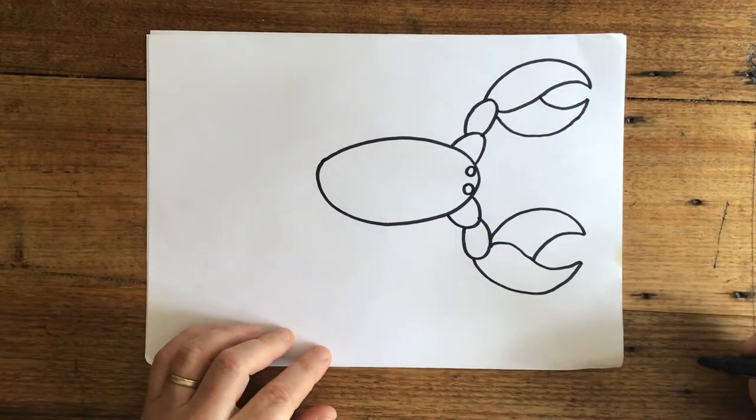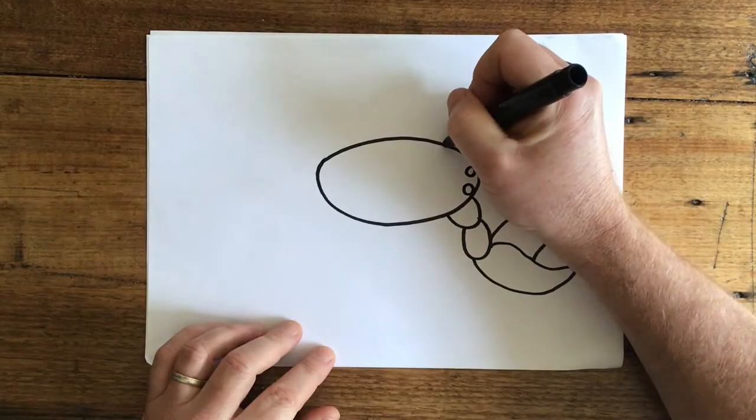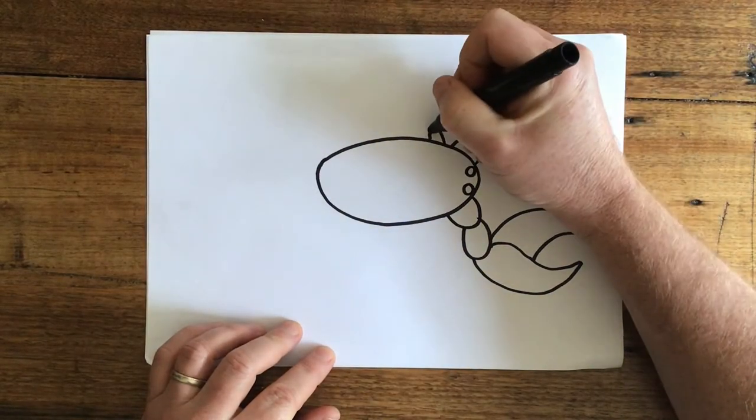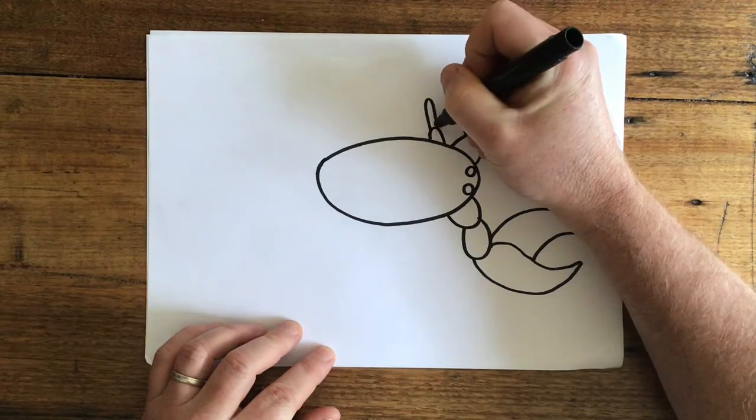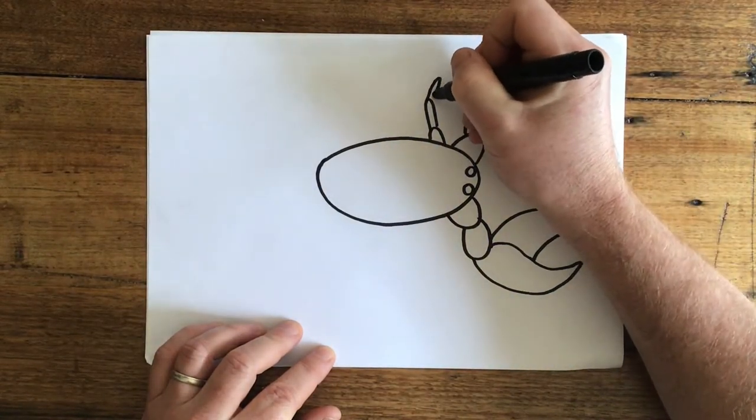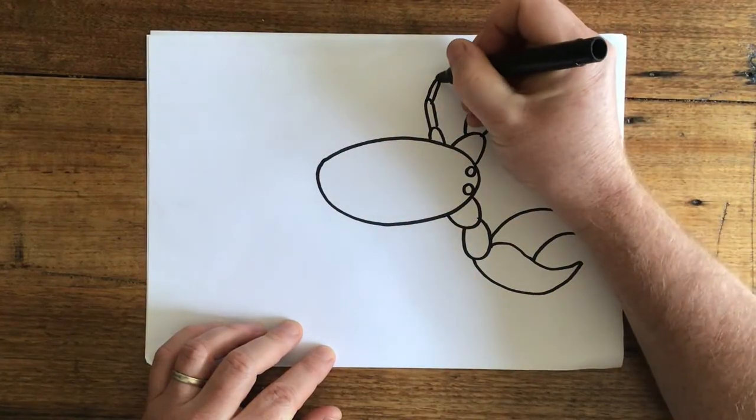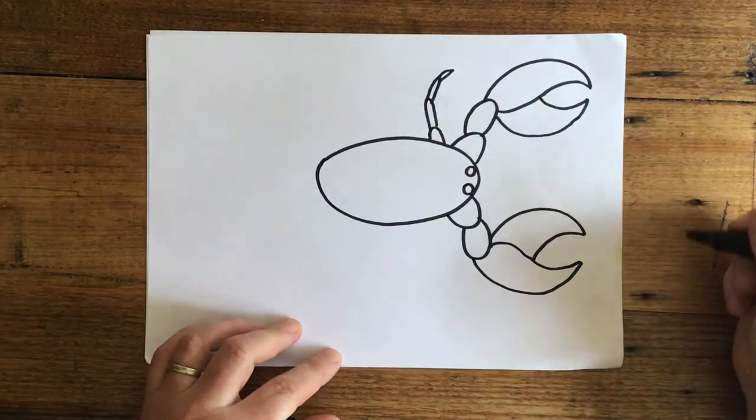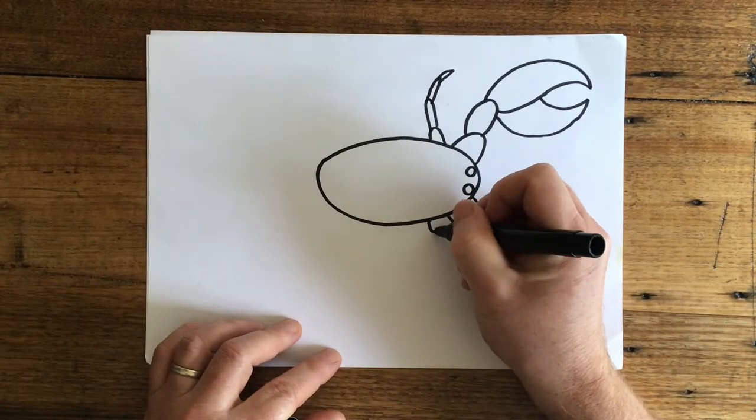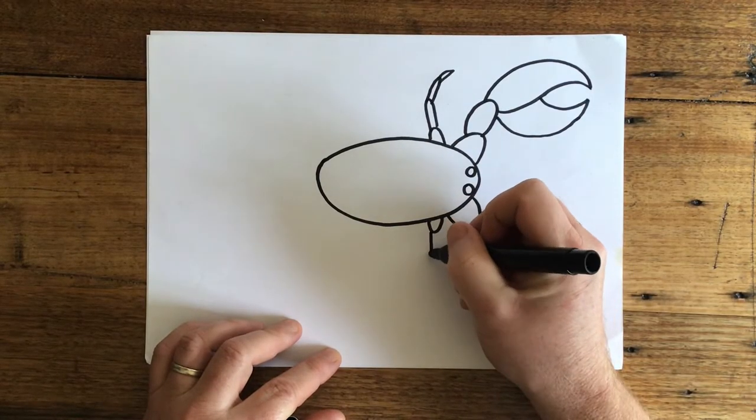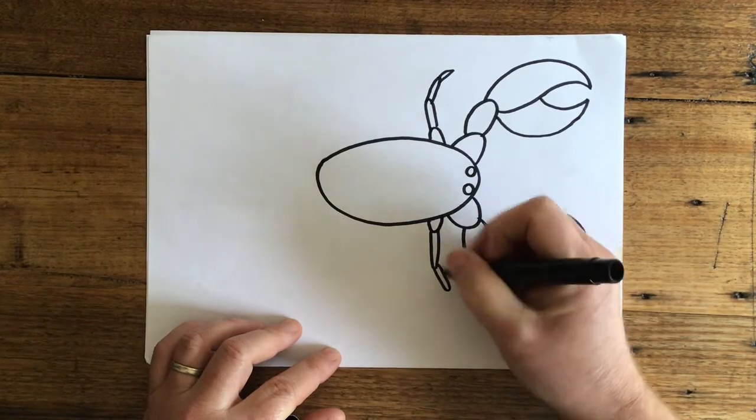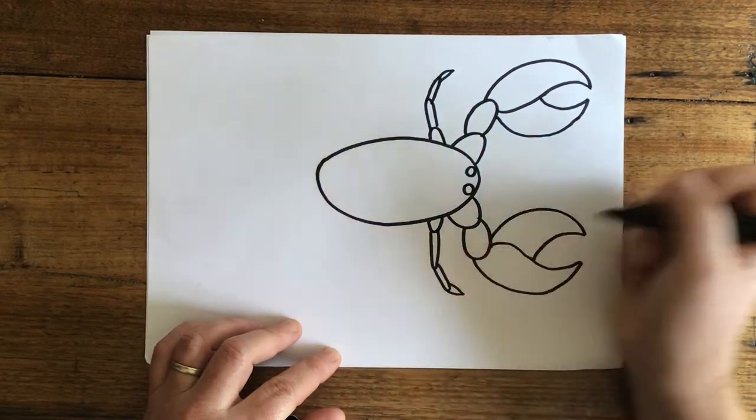Okay, shall we put some legs on our scorpion? Let's do a little loop like this. Maybe a long loop like this. Another smaller little loop and one more little one at the end. Let's do the same the other side. Let's do a loop, longer loop, another long skinny loop and a little point at the end.